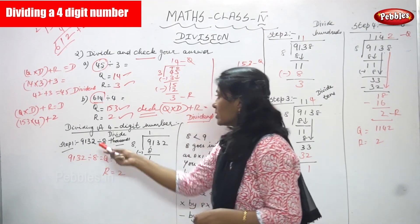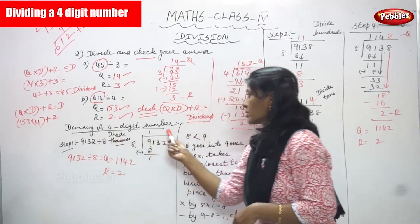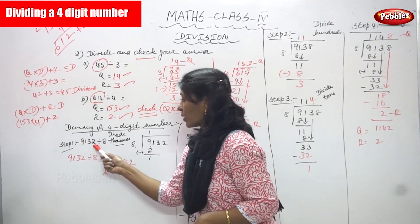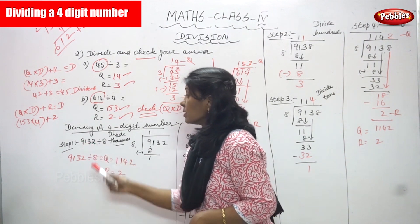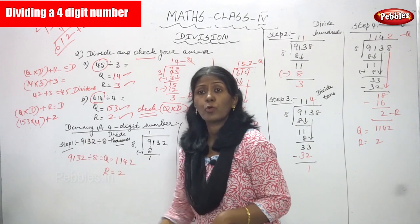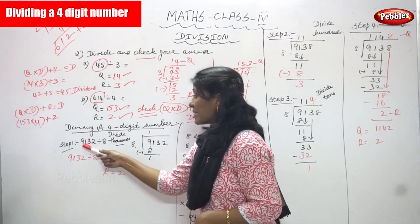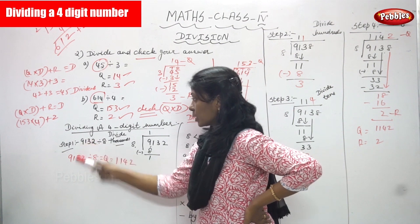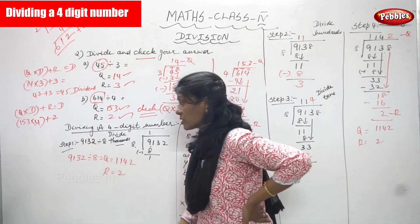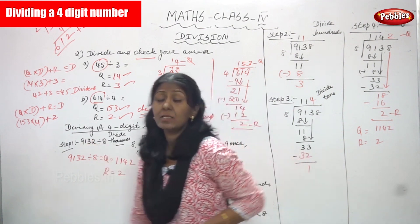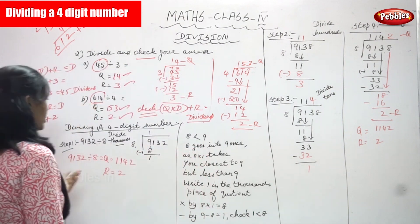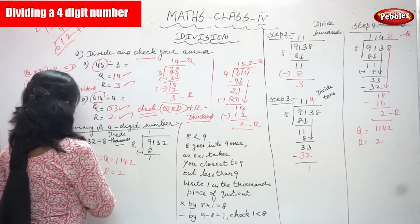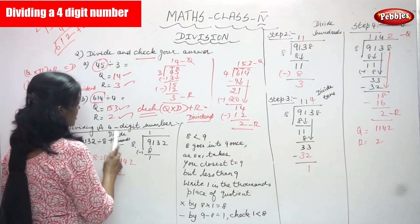Now we are going to see dividing a four-digit number. Ones, tens, hundreds, and thousands — so that is four digits. The number 9132 is divided by 8, which is a single digit number. We have to follow some steps.